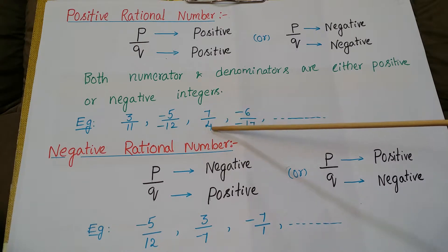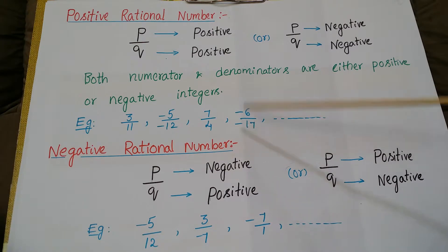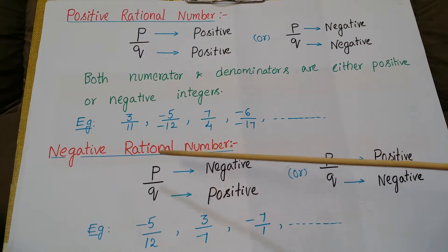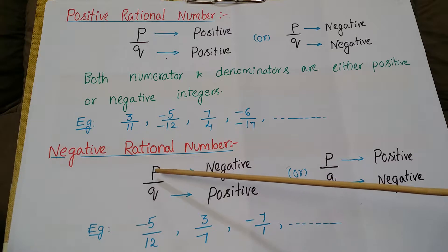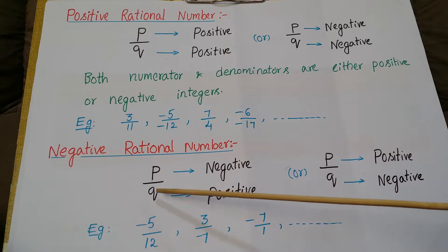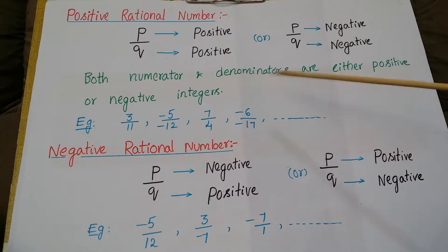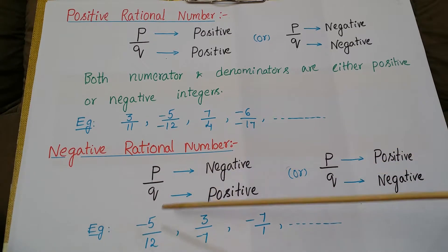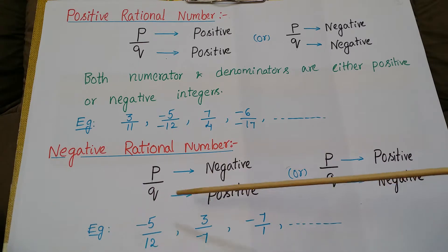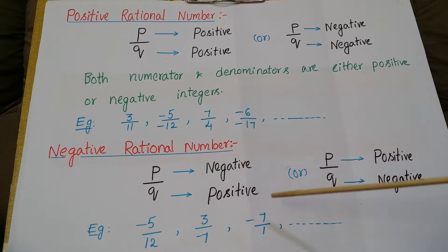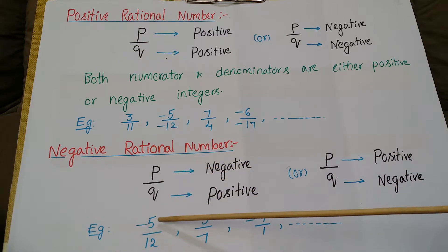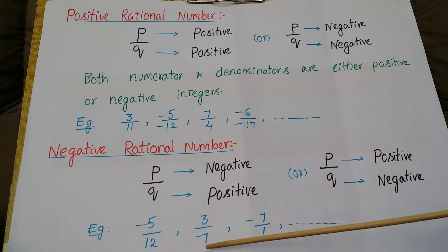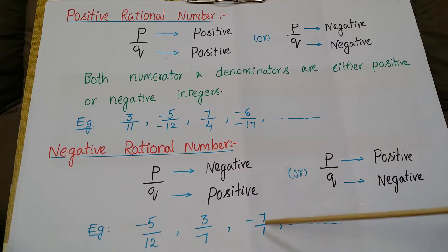Here both numerator and denominator are positive; here both are negative; here both are positive again; here both are negative. These are called positive rational numbers. Now, negative rational numbers: in negative rational numbers, one is negative — numerator is negative and denominator is positive, or numerator is positive and denominator is negative. See these examples: minus 5 by 12, 3 by minus 7, minus 7 by 1.